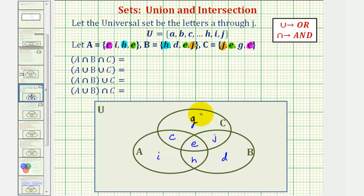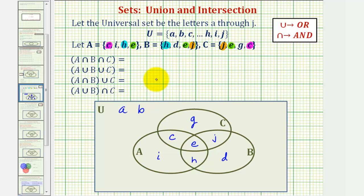Now we're almost done, but remember the universal set contains the lowercase letters A through J. The elements in the universal set that are not in A or B or C should be listed in the rectangular region. Notice lowercase a and b are not in sets A, B, or C, so those go in that outer region. Also F is not in A, B, or C, so we have F out here as well.